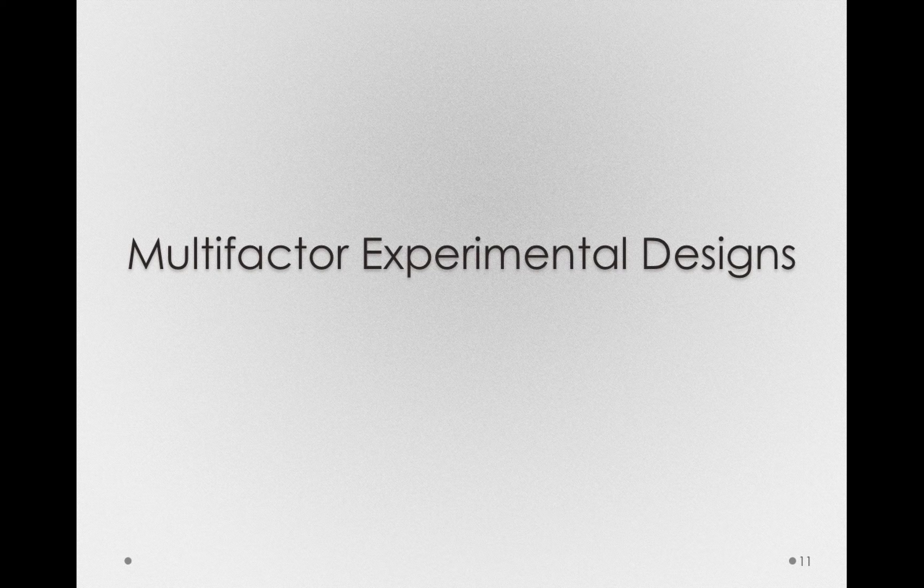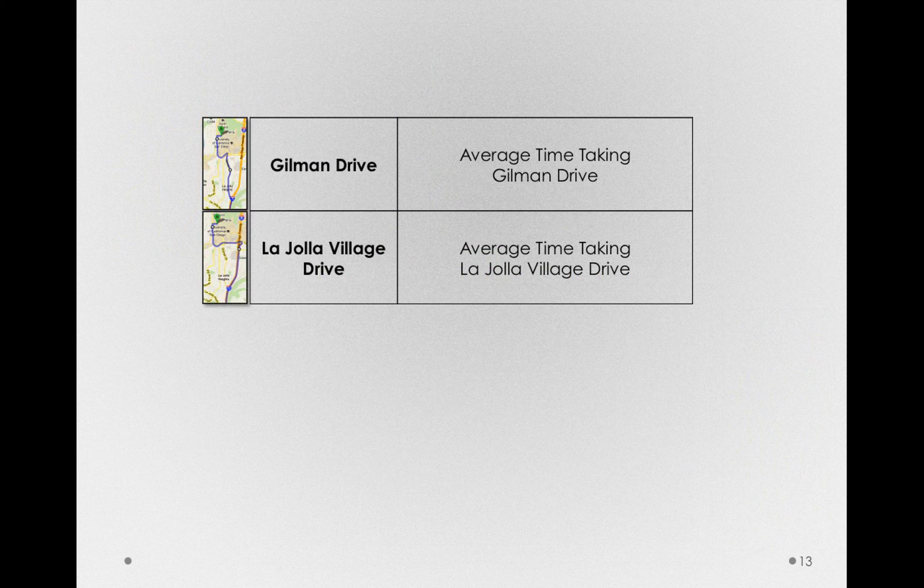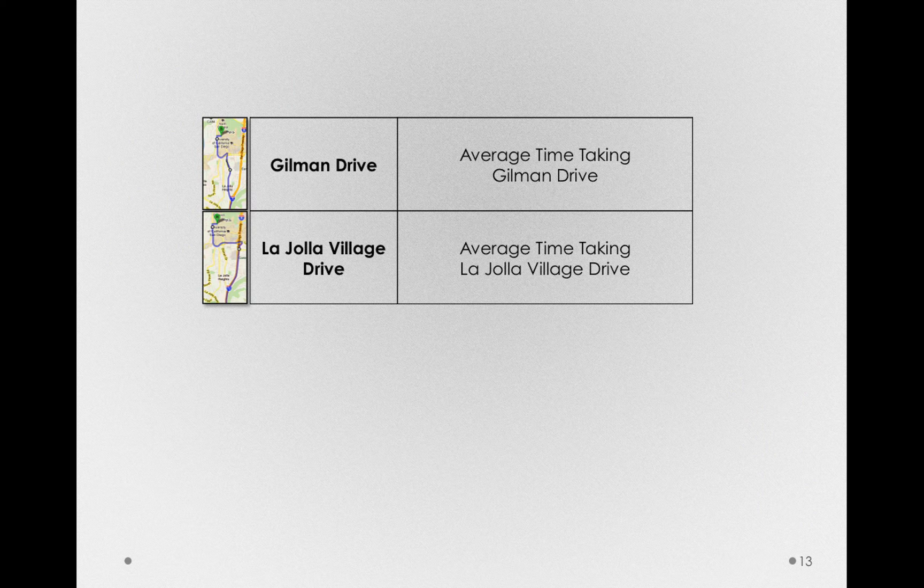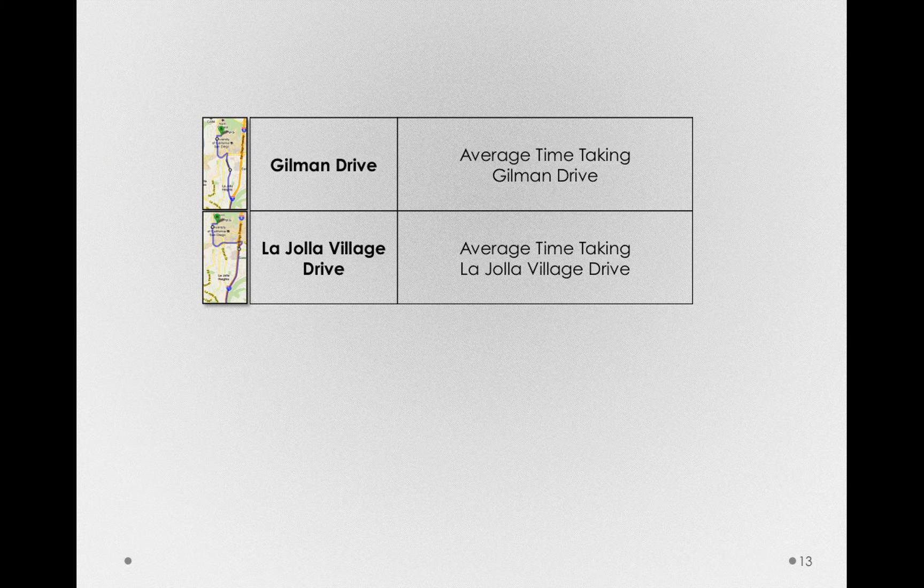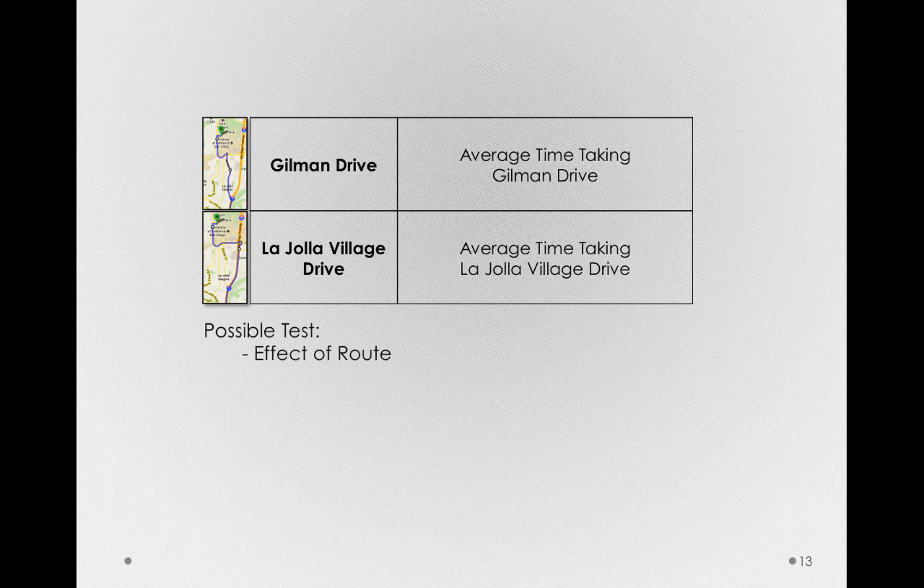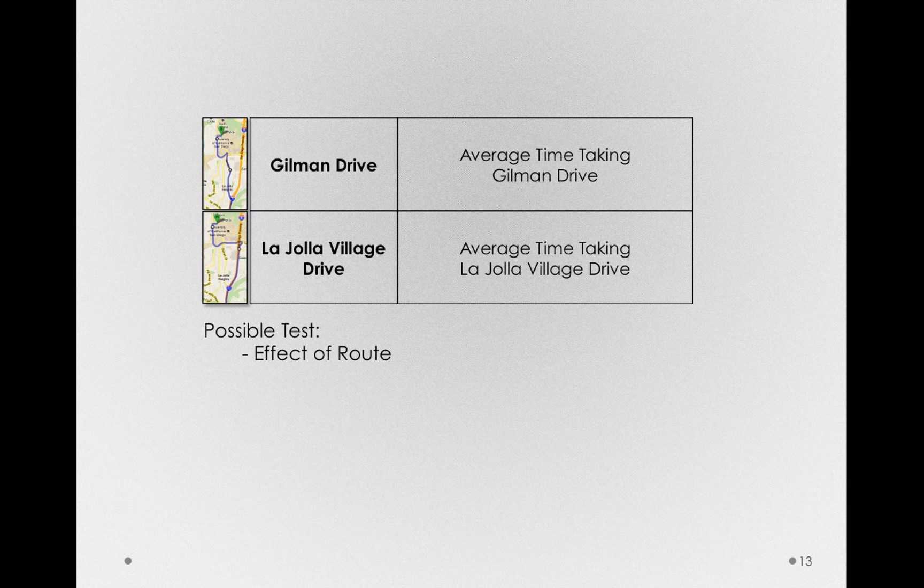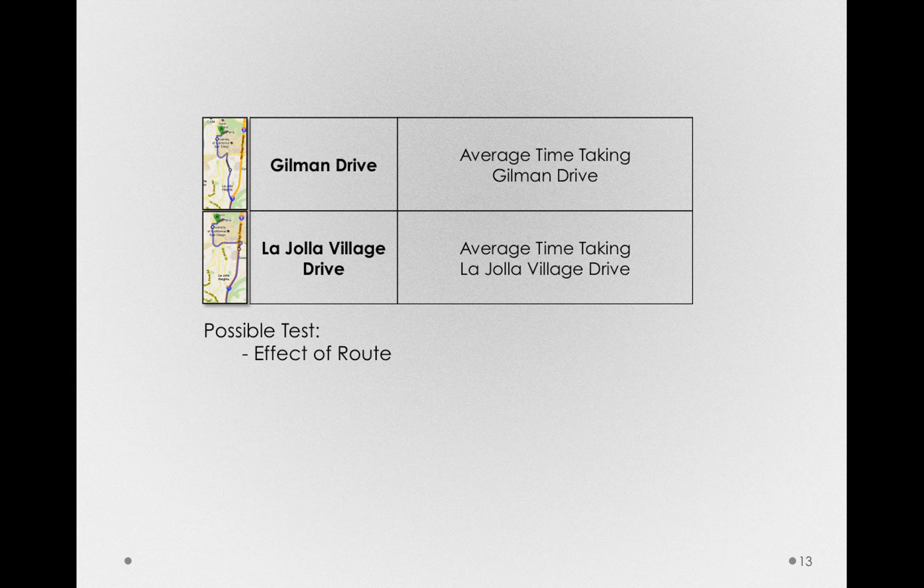Let's take a real-life example. I showed you, when I introduced variability, my two different graphs of times to campus, based on two different routes. One taking Gilman Drive, and one taking La Jolla Village Drive. I've been collecting data on different routes to campus for quite a while, so I have much more data than this to show you. But let's pause for a second and think about this design. If I just took Gilman Drive and La Jolla Village Drive, I really have a single-factor design with one factor being the route I took. And I only have one possible test with these data: what is the effect of route? Is Gilman Drive or La Jolla Village Drive faster?